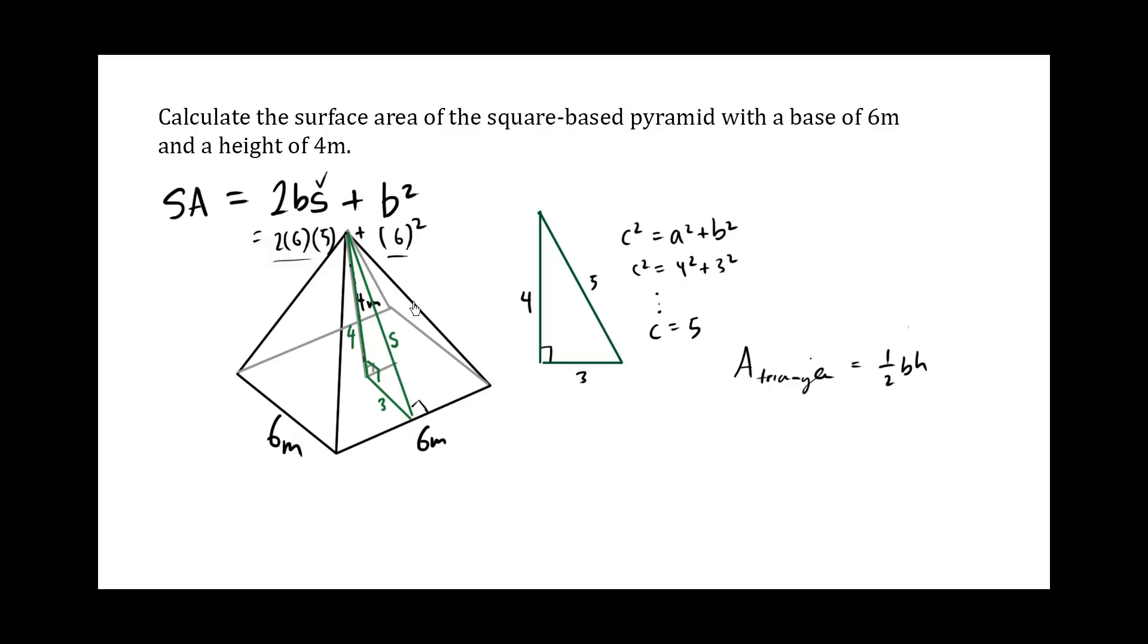Now if you have 1, 2, 3, 4 of these same triangles, then you're going to have 4 area of a triangle is equal to 4 times 1 half, which is 2Bh.